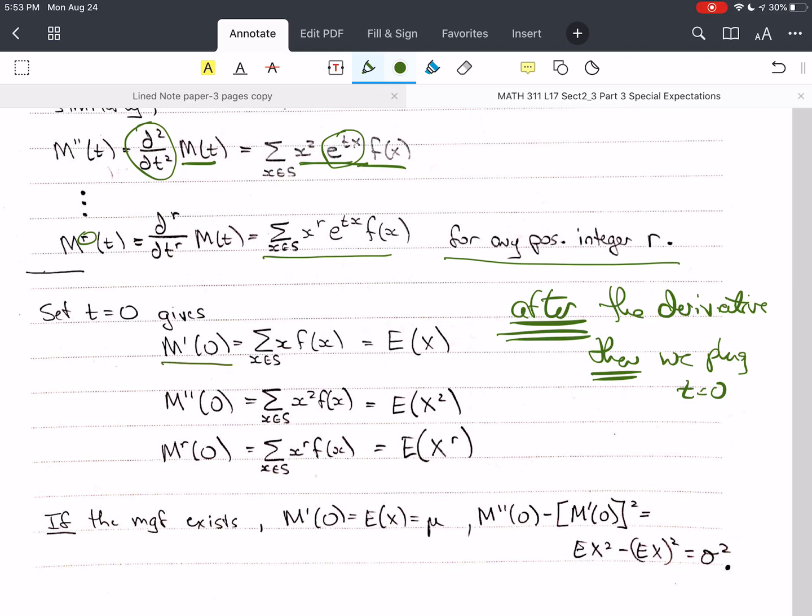the first derivative of the moment generating function at t equals 0 gives us E of X. The second derivative at t equals 0 gives us E of X squared. And so forth to the r-th derivative, we get E of X to the r-th power. If,